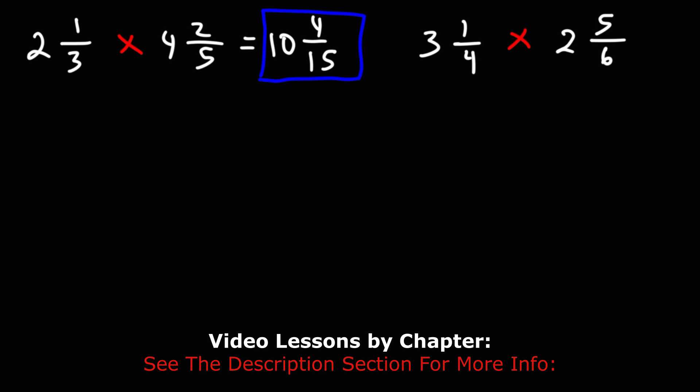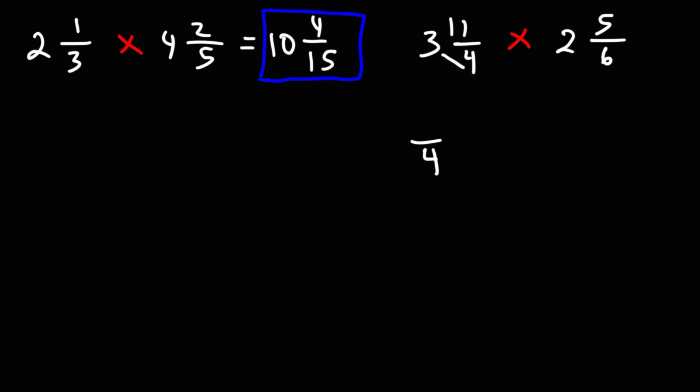So let's convert these to improper fractions. First, let's keep the denominator the same. To get the numerator, it's going to be 3 times 4 plus 1. 3 times 4 is 12, 12 plus 1 is 13. For the next one, we have a denominator of 6, so we'll keep that the same. 2 times 6 is 12 plus 5, that's going to be 17.